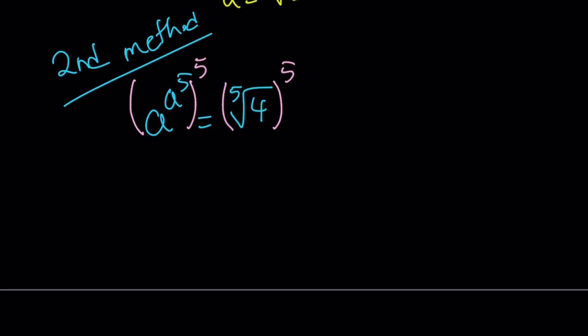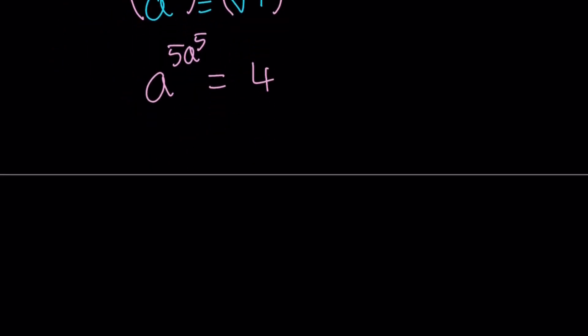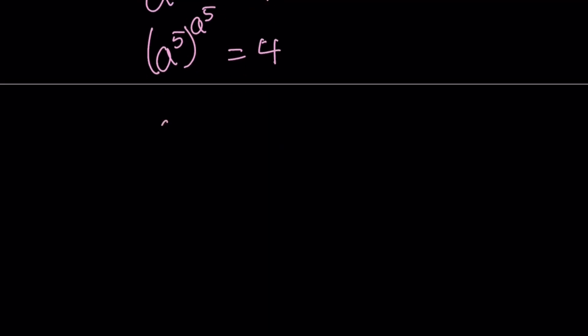This is going to give us, when you raise a power to another power, you multiply them. So this becomes (a^(a^5))^5 = a^(5a^5) = 4. The fifth root and the fifth power cancel each other out. You see that five, I can put it inside using properties of powers and write this as (a^5)^(a^5). The base and the exponent are the same, and the result is four. This implies that a^5 = 2. From here, a becomes the fifth root of 2 as before.